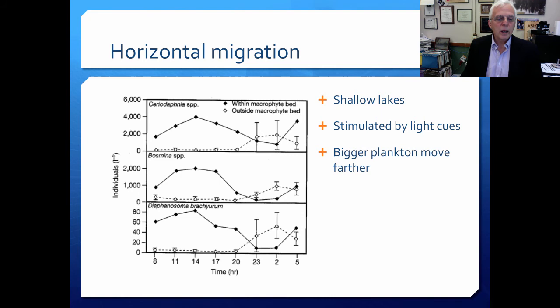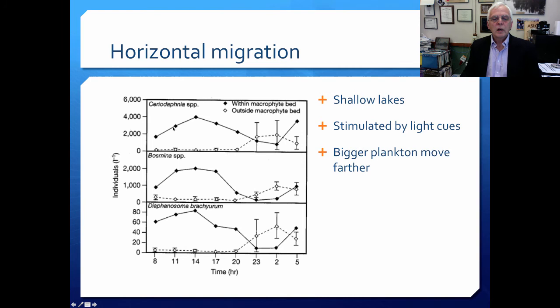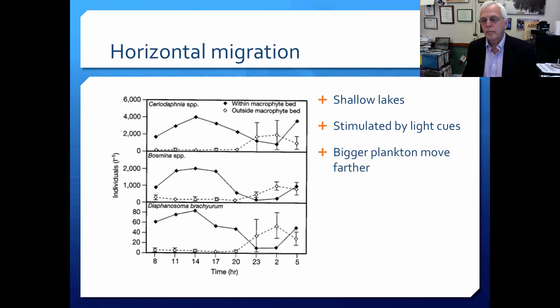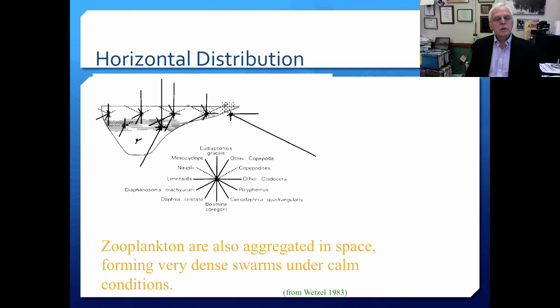Horizontal migration is also pretty important, especially in shallow lakes. The x-axis shows time of day and we have individuals measured inside and outside macrophyte beds — plant beds in the littoral zone. Here we have inside the macrophyte beds as dark symbols and outside macrophyte beds as light symbols. For Ceriodaphnia and Daphnia, they tend to be inside the macrophyte beds until it gets dark, then tend to migrate outward into the open water. Bosmina and Diaphanosoma show a similar kind of pattern. This is seen in shallow lakes, tends to be stimulated by light cues, and the bigger planktonic organisms will move farther because they can move a lot faster.